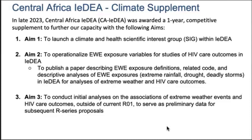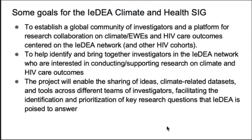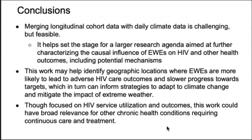Aim three of the supplement is to support initial analyses to help investigators in our network generate preliminary data that they can use either for new IDEA concept proposals or for grant proposals. Our goals are to look for people interested in conducting similar work, share ideas, share datasets and tools, and help facilitate the identification and prioritizing of research questions that IDEA and other HIV cohort collaborations are poised to answer.